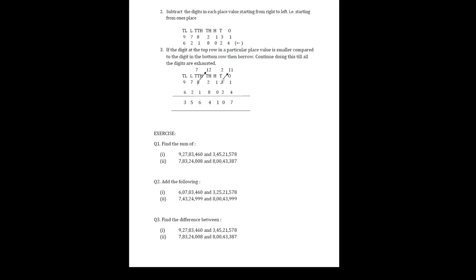But when it comes to subtraction, you have to write the bigger number on top and the smaller number in the bottom row. The phrase 'find the difference' means subtract. First check which number is bigger — here we have 9 crore 27 lakhs 83,460 and 3 crore 45 lakhs 21,578. Since 9 crore is bigger than 3 crore, this number goes on the top row and the other on the second row.